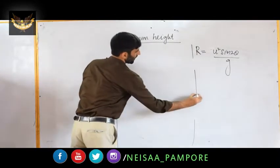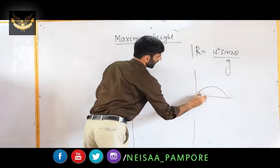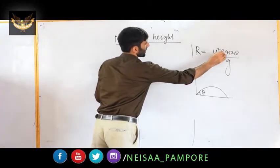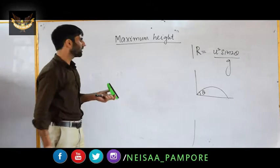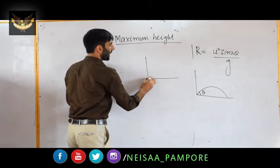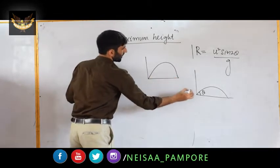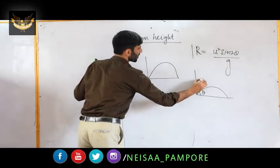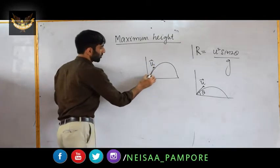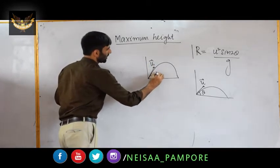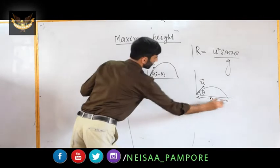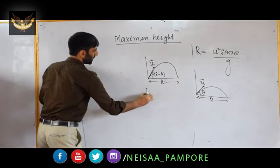Let the initial angle of projection be θ. The horizontal range is R = u² sin(2θ)/g. Now I will change the angle of projection to 90° minus θ, while keeping the initial velocity and mass of the projectile the same. In this case, let the new range be R prime.